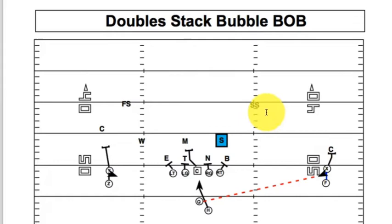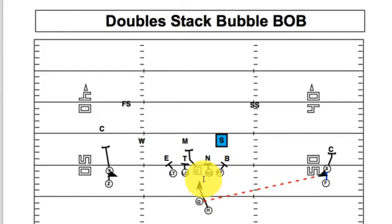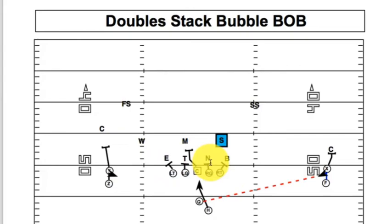If the defense had rotated the safety down and kept the Sam inside — more of a man coverage look — with the free safety playing center field, then the quarterback would have had to check to another play. It would not have been a good look to run the ball inside, and the outside wouldn't be good either. He might have checked to a quick game concept or a vertical route concept, whatever the coaches prefer. That's Double Stack Bubble Bob.